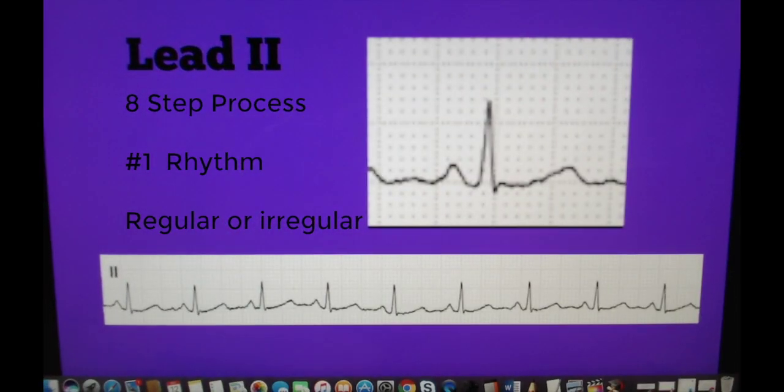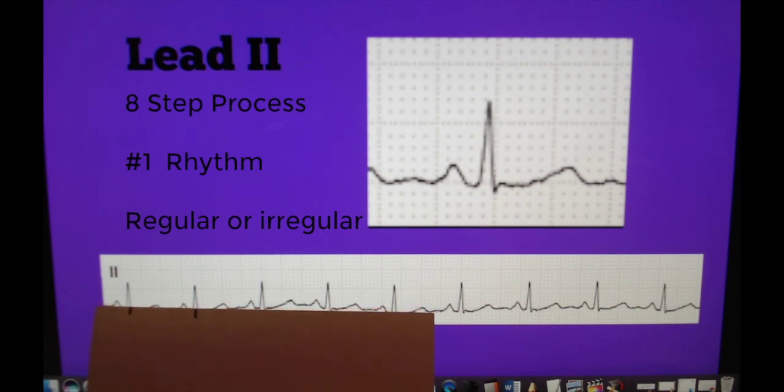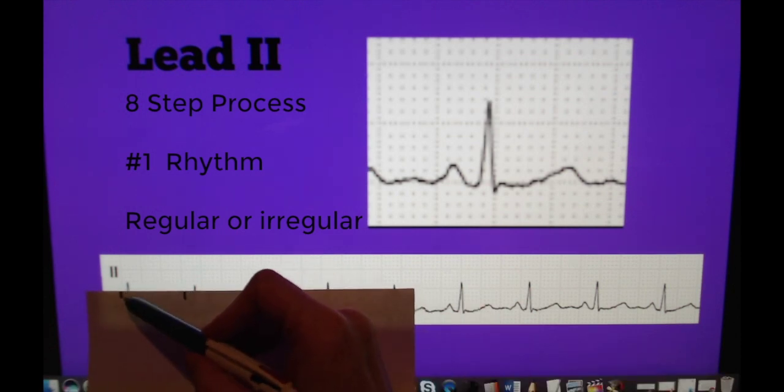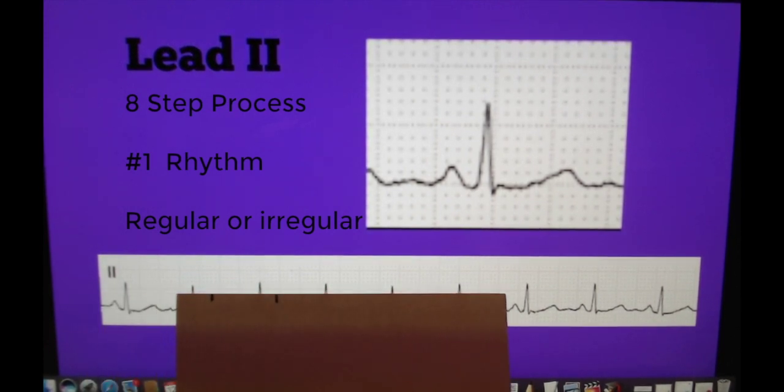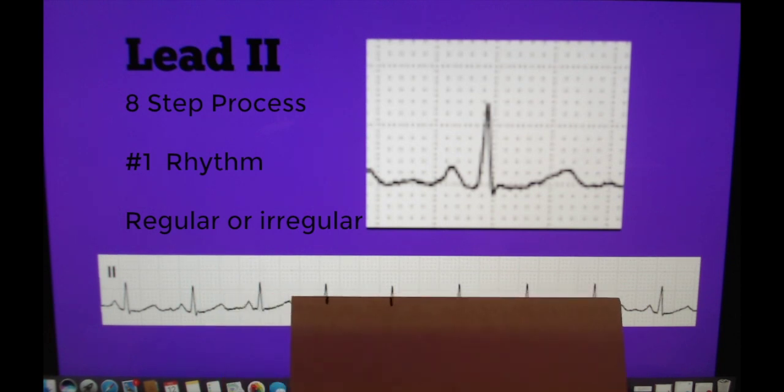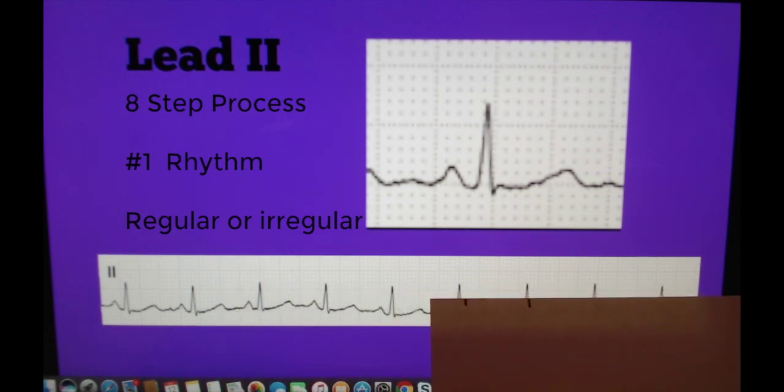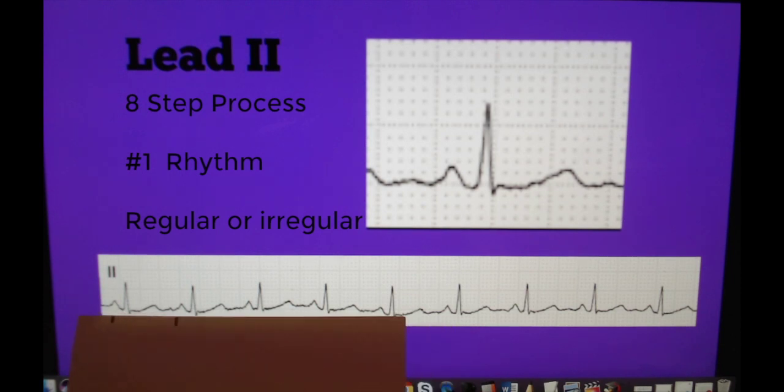Or we can use a piece of paper if you don't have calipers and you just mark it. I have already pre-marked mine from your R to R and then you are going to take this all the way down your six second strip to identify if we have a regular or irregular rhythm. In this lead we do have a regular rhythm for the ventricle contraction.